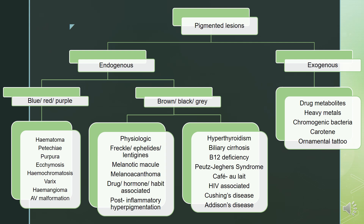Brown, black, or gray lesions can be physiologic freckle, ephelides, lentigines, melanotic macule, melanoacanthoma, drug- or hormone- or habit-associated, post-inflammatory pigmentation, hyperthyroidism, biliary cirrhosis, Becker's deficiency, Peutz-Jeghers syndrome, café-au-lait spots, HIV-associated, Cushing's disease or Addison's disease. Exogenous lesions can be due to drug metabolites, heavy metals, chromogenic bacteria, carotene, and ornamental tattoos.